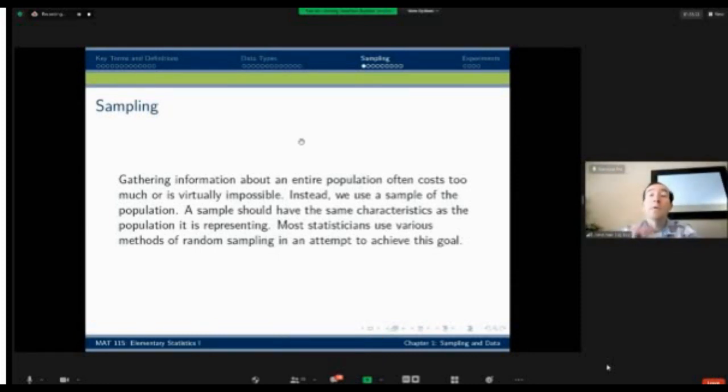The key reason why we use a sample is essentially because in most cases trying to understand an entire population by collecting information about everything in the population is just not feasible. It's called a census when you're able to collect information about every single individual.